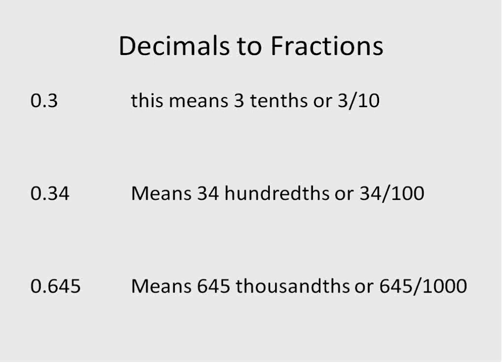But for terminating decimals, it's pretty easy to put them in fractions. So I'll just briefly describe how to do that. 0.3 means 3 tenths, or in other words, 3 over 10. 0.34 means 34 hundredths or 34 over 100. And 0.645 means 645 thousandths or 645 over 1000. These ones can be reduced down to lower terms.